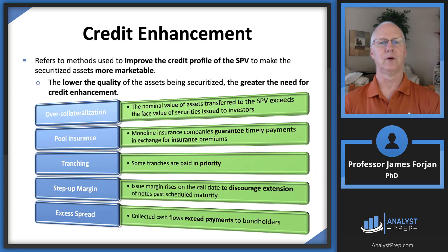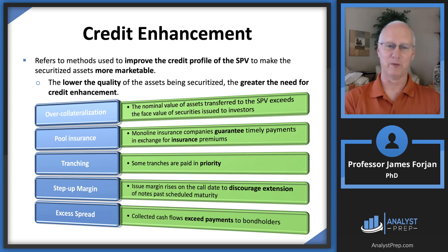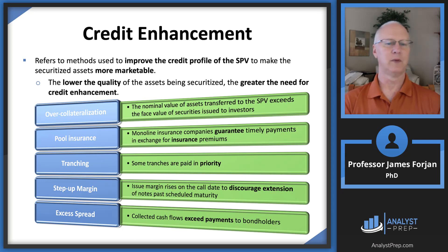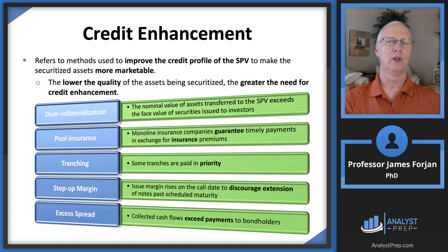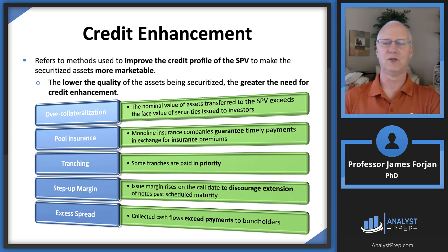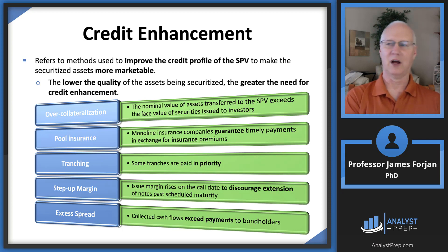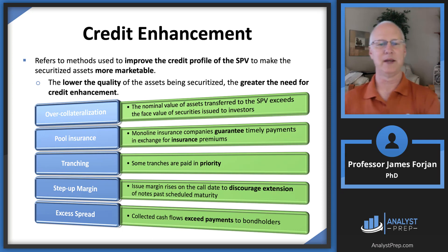Credit enhancements: the goal is to improve the credit profile of the SPV to make the securitized assets more marketable — meaning we want investors willing to pay more for them. Options include over-collateralization (like using a Pink Panther diamond as collateral), getting an insurance company to insure us, dividing the pool into different tranches. We go to other business units inside the financial institution and ask what specific investors want, then design the tranche to market it to those with pent-up demand. Also: margins and excess spreads.